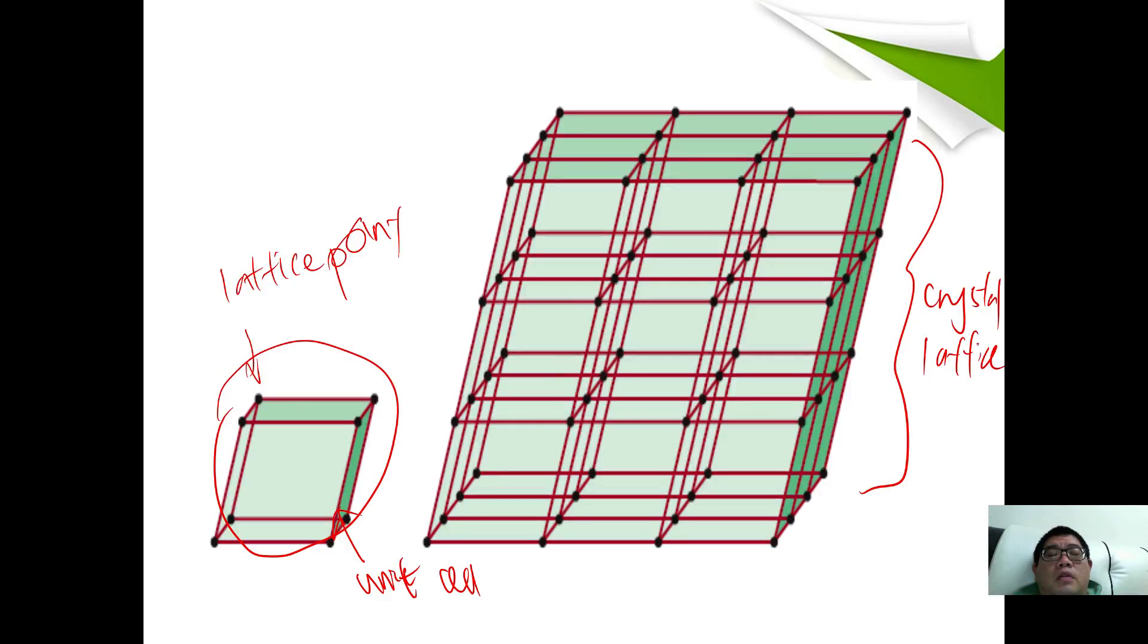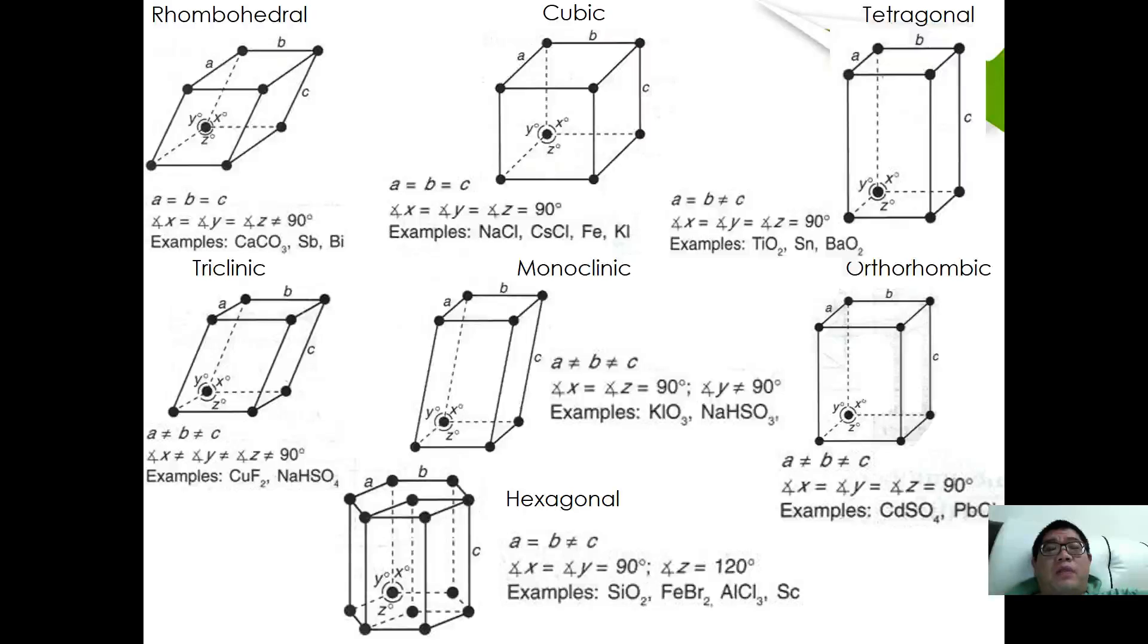Let's together understand the basic unit cells that we have. We have rhombohedral, cubic, tetragonal, triclinic, monoclinic, orthorhombic, and hexagonal. These are the 7 basic primitive unit cells and each of them has their special characteristics. In here I am not going to explain further about their characteristics; you may have a look on your own, and if you require any assistance, please don't hesitate to let me know.